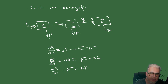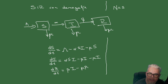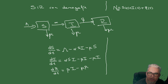Hay que mencionar varias cosas. N(t) sigue siendo S(t) + I(t) + R(t). Pero ahora el cambio en la población total ya no es cero. Sumando las tres ecuaciones, los términos alfa·S·I y beta·I se cancelan entre sí.